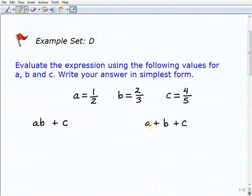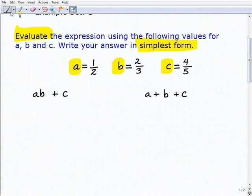We can't do anything with these expressions as they are, but if we're given values, for example A equals one-half and B equals two-thirds and C equals four-fifths, we're going to replace these variables with these particular values and then work the problem. That's what it means to evaluate. And then lastly, if we have any answers that are fractions, we're going to make sure we write them in simplest form. In other words, we're going to fully reduce our fractions.